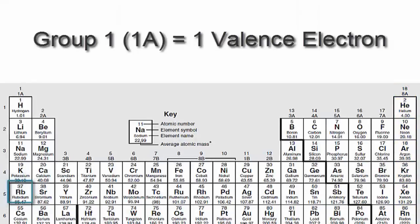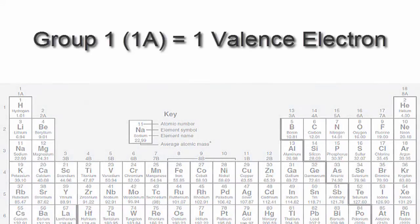So for rubidium, which is in group 1, sometimes called 1A, we have one valence electron, which we'll put right next to the element symbol, Rb, for rubidium.